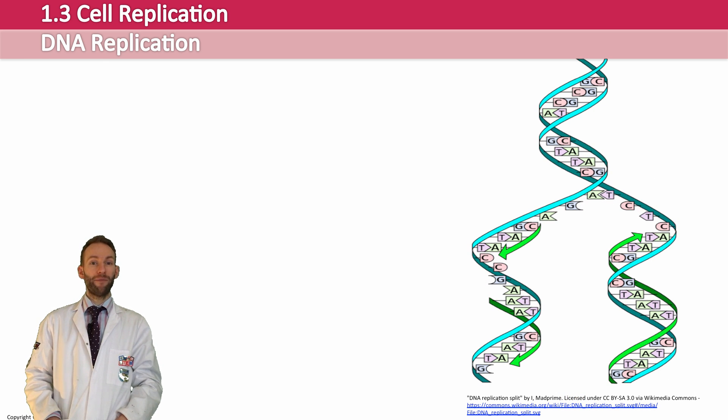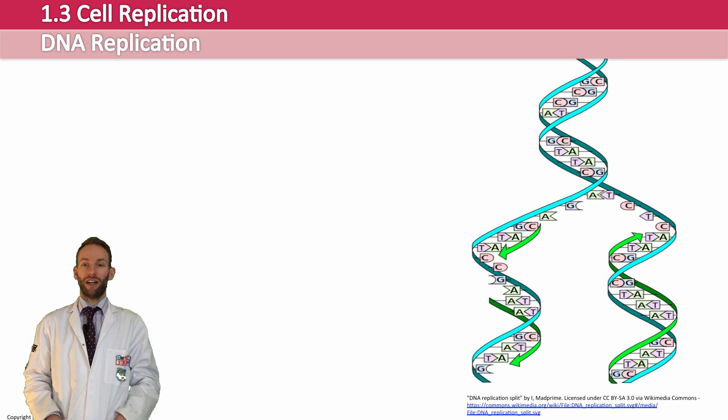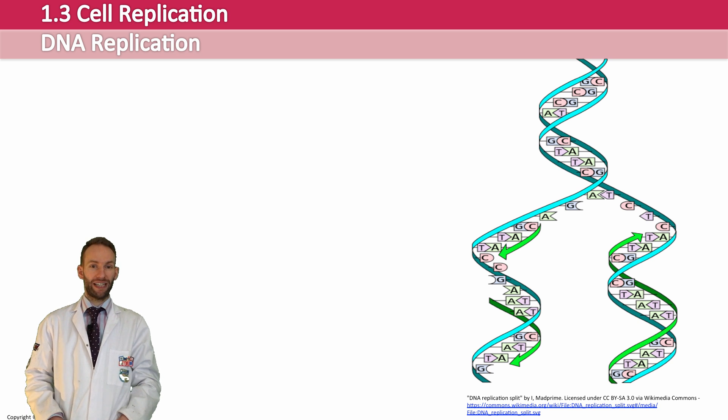And what you end up with, therefore, is the two separate strands coming apart. And these form what we call templates, which is where the new DNA strands are going to form. Free nucleotides will be able to come in and match up by complementary base pairing. So free C nucleotides will come in and match with the G's, and free A's will come in with the T's, et cetera, to form two complementary strands on each of the template strands.